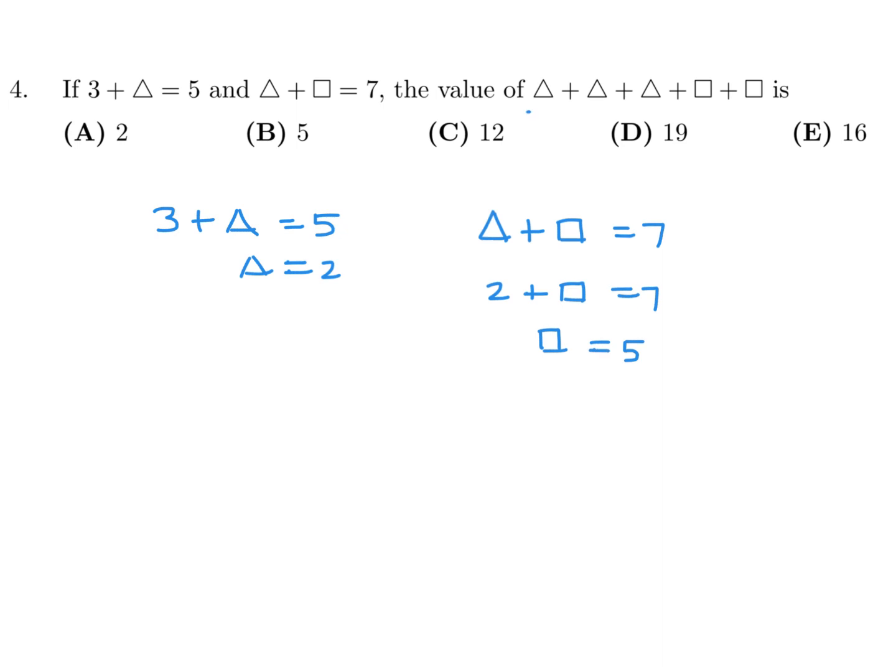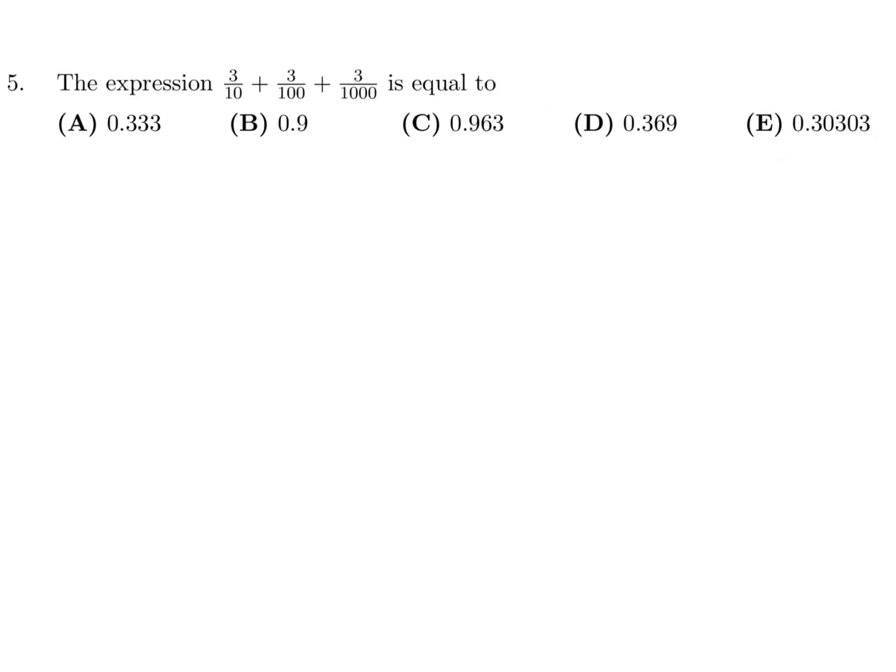Therefore this, which would be 3 triangles and 2 squares, would be 3 times 2 plus 2 times 5, and that is 16. So the answer for number 4 is E.